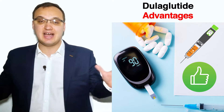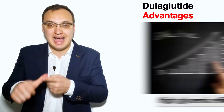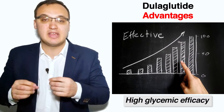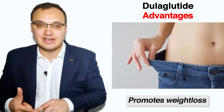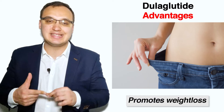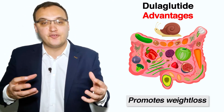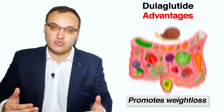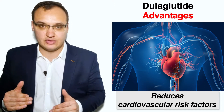Dulaglutide has some advantages over other diabetic medications. First, it has very high glycemic efficacy compared with other diabetic medications — meaning how good the medicine is at lowering blood glucose levels. The second benefit is that it promotes weight loss by slowing down gastric emptying, making food move more slowly through the stomach, and also causing reduced appetite.